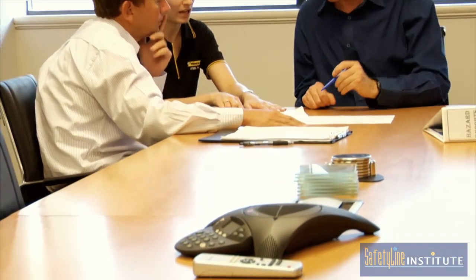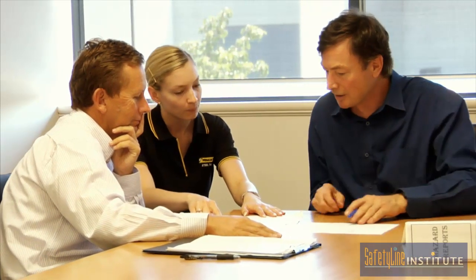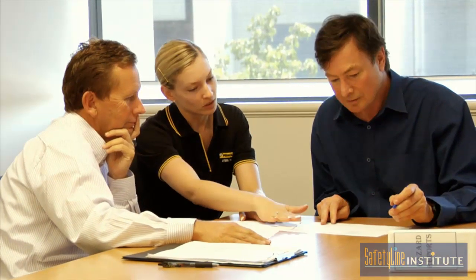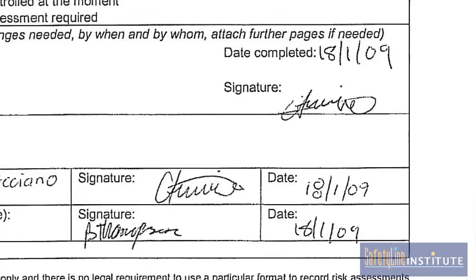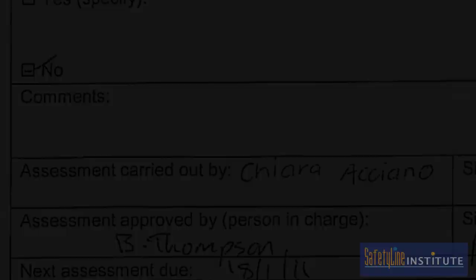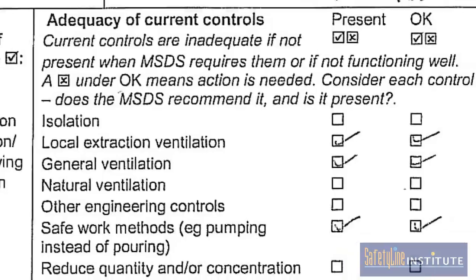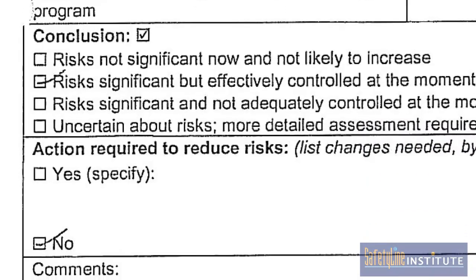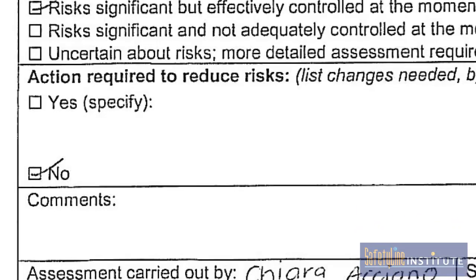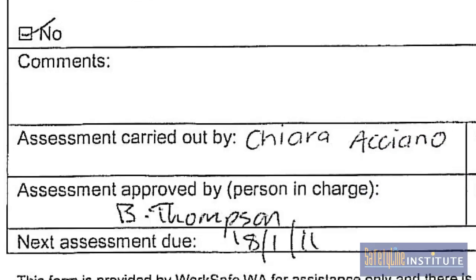Where the risk assessment finds that controls need to be improved, or where processes are complex or there is uncertainty about the risks, a detailed assessment with a report must be completed. The assessment report should include the date and who did the assessment, the hazards of the chemical, the adequacy of controls at the time of the assessment, the conclusion about risk, the need for improvements, details of any actions to be taken, who will implement the actions, and the completion date and sign off.